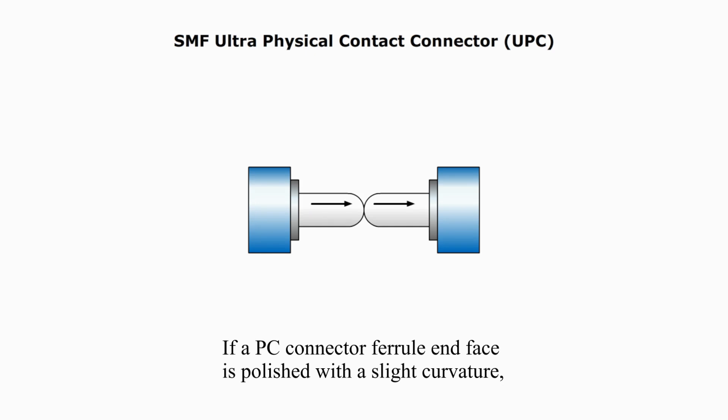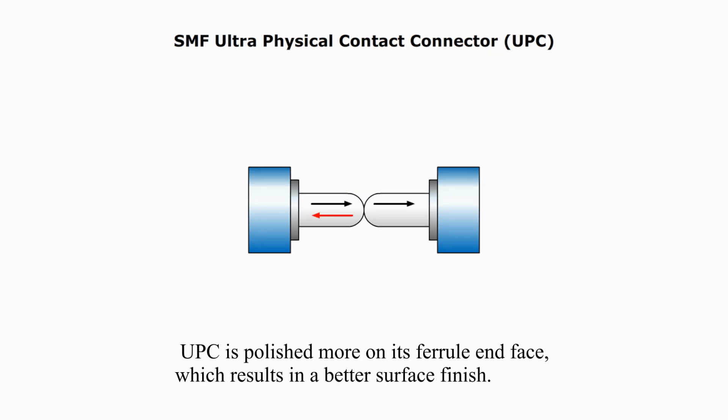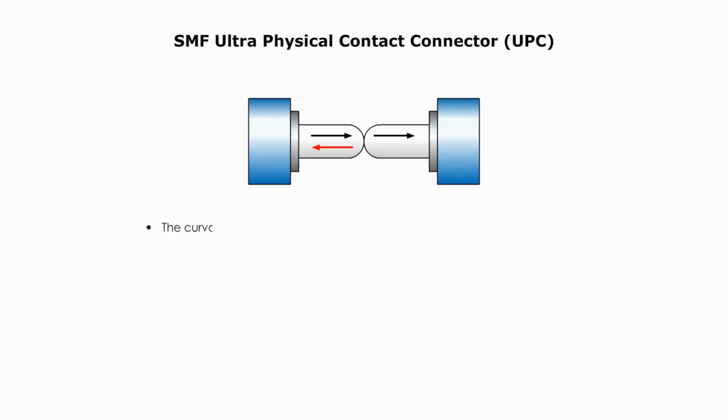If a PC connector ferrule interface is polished with a slight curvature, UPC is polished more on its ferrule interface, which results in a better surface finish. The curvature makes them look more like a domed-shaped convex interface, thus resulting in lower back reflection.